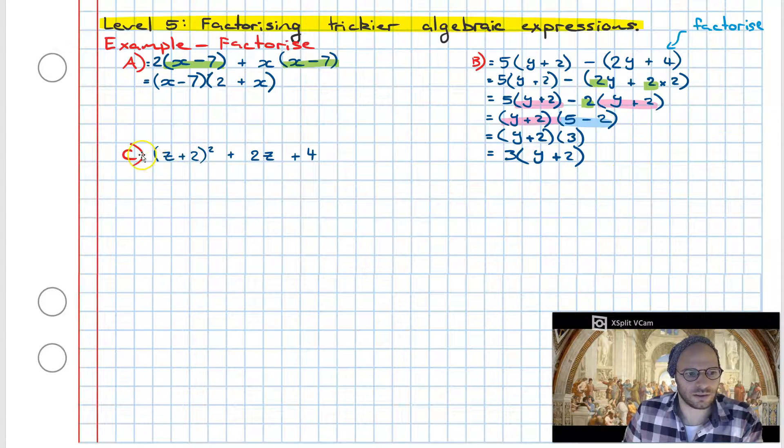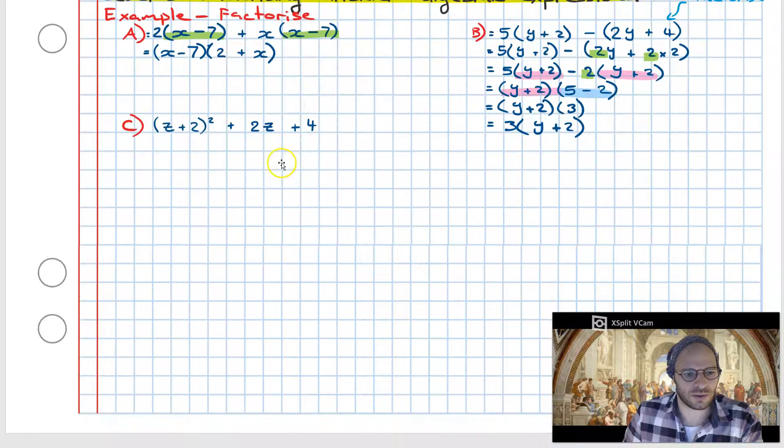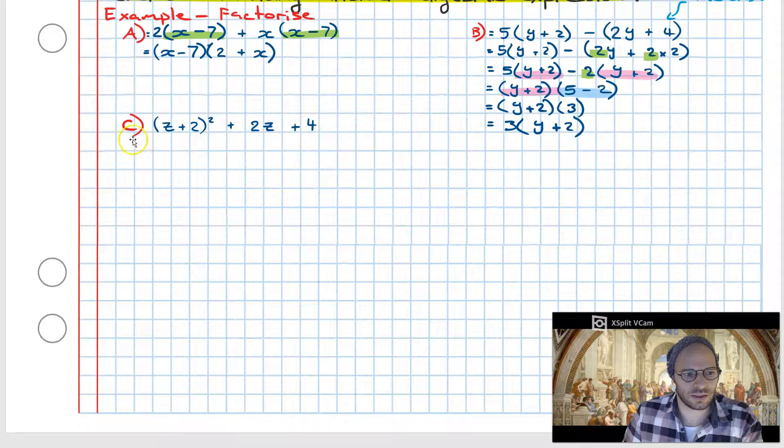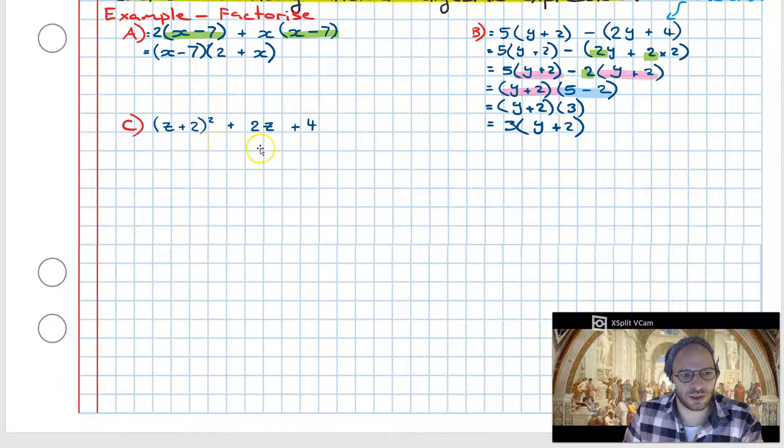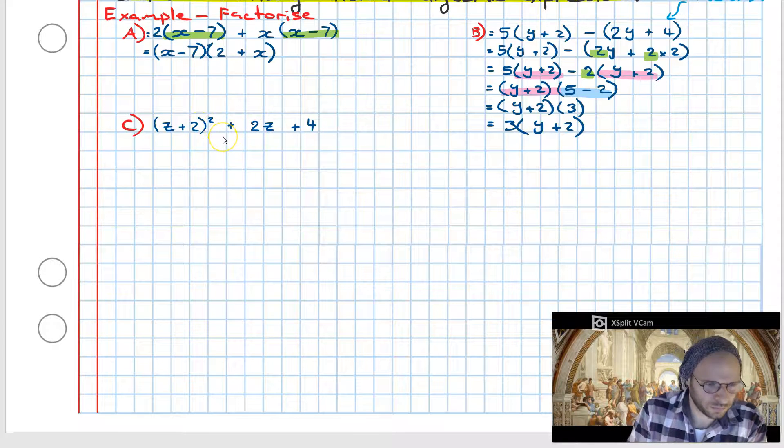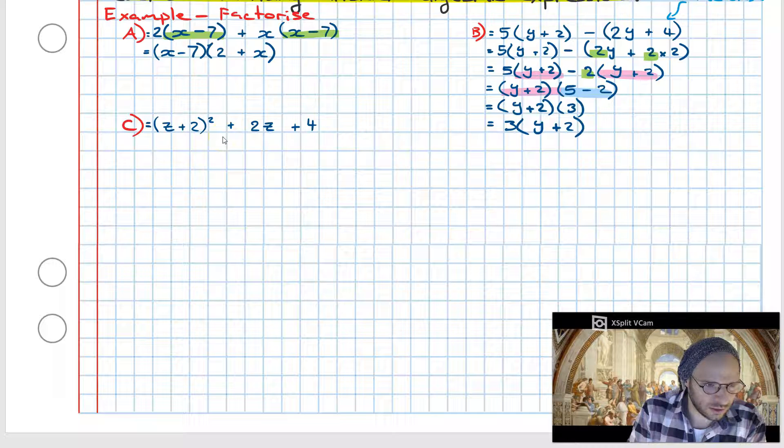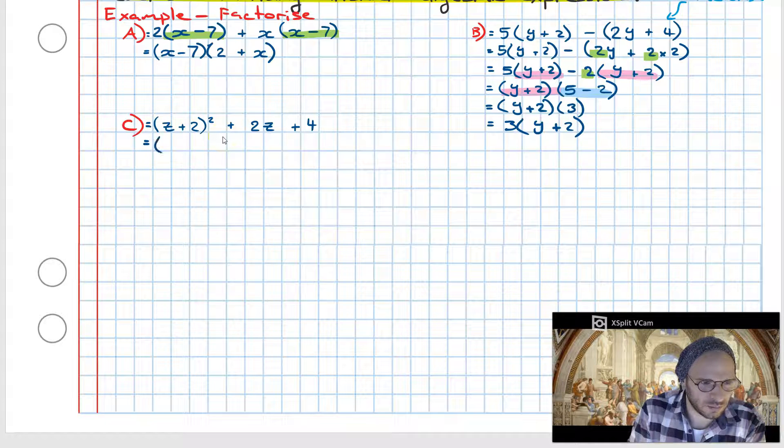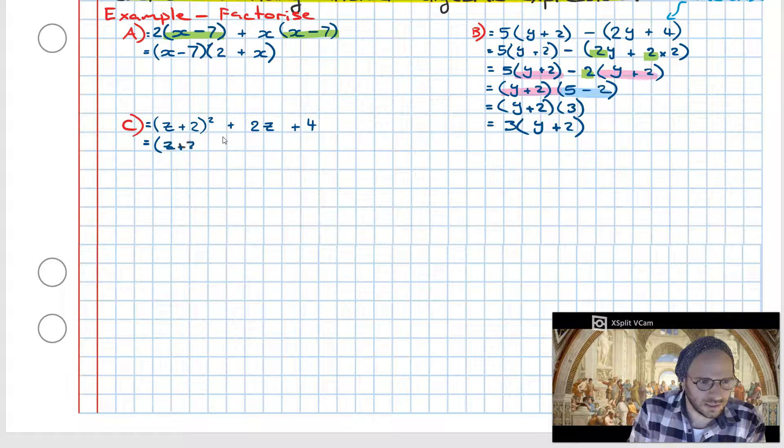Example C: We have something that looks rather troubling. We have z plus 2 all squared plus 2z plus 4. What we are going to do here is we're going to open up this z plus 2 to make it look a little bit clearer. I'm not going to expand but I'm going to decompress it.